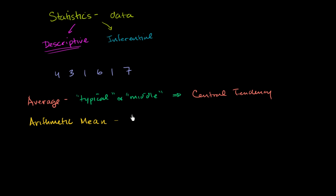Well, let's just compute it. It's going to be 4 plus 3 plus 1 plus 6 plus 1 plus 7 over the number of data points we have. So we have 6 data points, so we're going to divide by 6, and we get 4 plus 3 is 7, plus 1 is 8, plus 6 is 14, plus 1 is 15, plus 7 is 22. Let me do that one more time. You have 7, 8, 14, 15, 22.